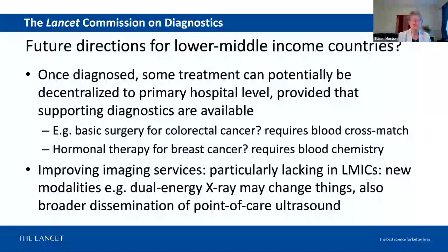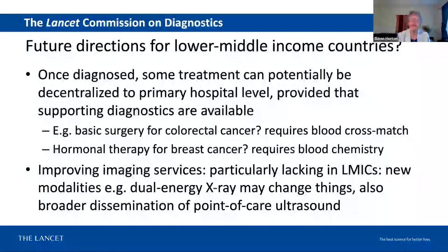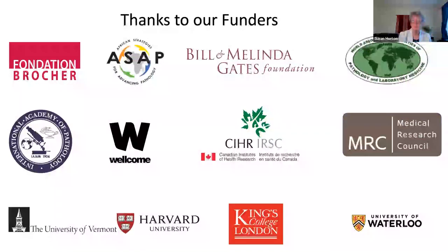At the first level hospitals, we do need resources to decentralize treatment. It requires very basic diagnostics — blood chemistry is needed to support hormone therapy, and blood matching is needed if surgery or emergency surgery for people with cancer is required. Imaging is a particular lack. Ultrasound was just starting to come in at primary health centers as we were writing the commission, but still not very much available. The good news is that new technologies may help to make things better — point of care ultrasound, dual energy X-ray. And with that, thank you.